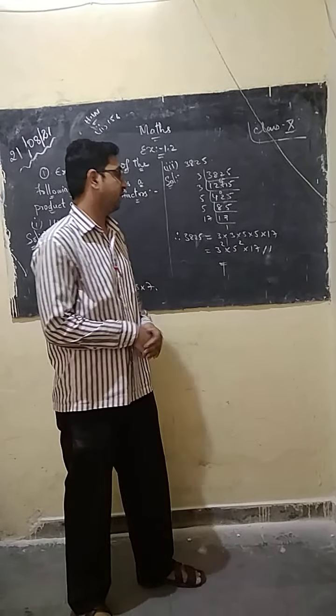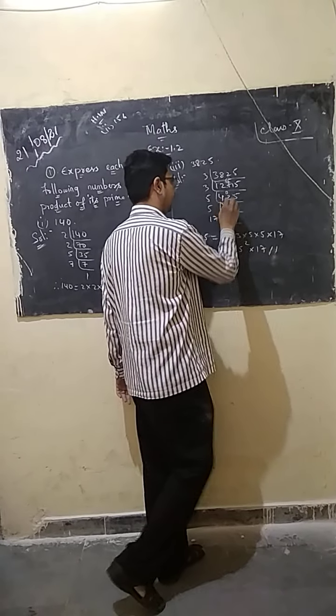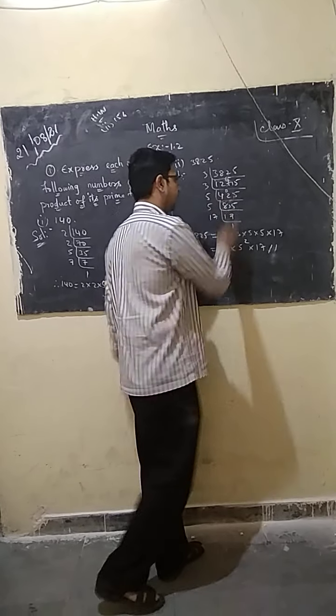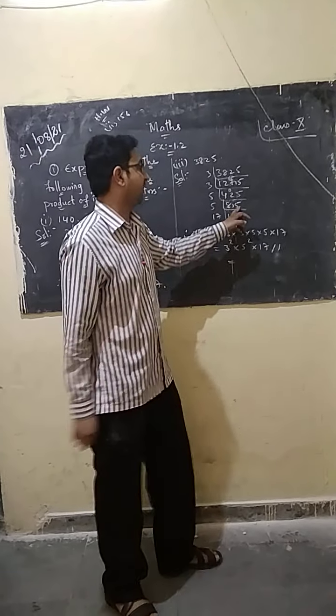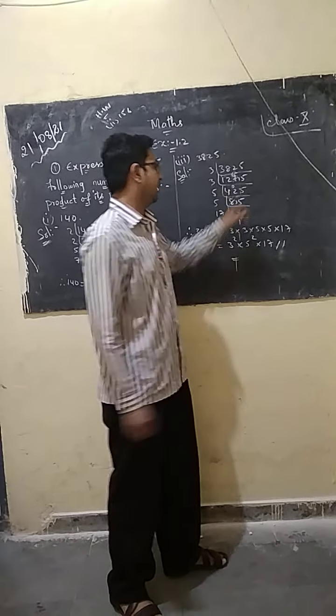425 divided by 5 gives 85. 85 is also divisible by 5, so we divide again: 85 divided by 5 gives 17. 5 times 5 is 25, and 3 is remaining. We place 3 here. So continuing the division, 5 times 5 gives us our next step.